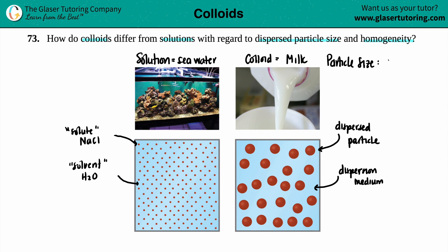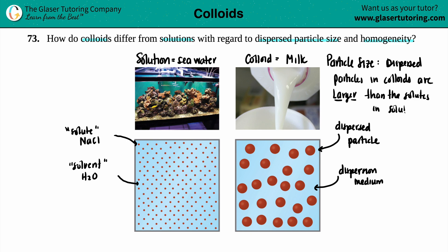For particle size, the dispersed particles in a colloid are larger — they will always be larger than the solutes in solutions. There's actually a third tier: solutions have the smallest particles, colloids are a bit bigger, and then there are suspensions, which have the largest particles being dropped into a solvent or dispersion medium. Here, though, we're just comparing colloids and solutions, so colloids have bigger particles.